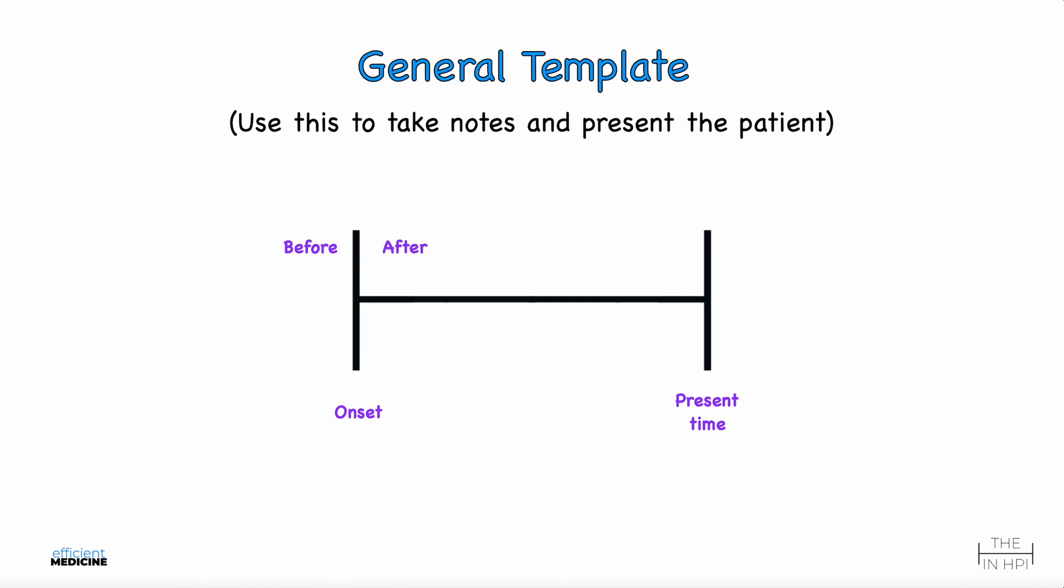Then looking at that line, we have what happened before the onset. So think, what do we want to ask before the onset? What could have been a provocation? Was the patient near a sick contact? Did the patient eat something? And then we have after the onset. Did the patient try any treatments? Did anything make the patient feel better or make it worse?